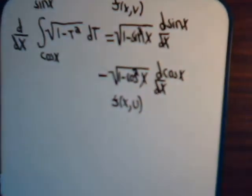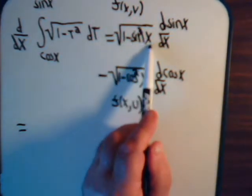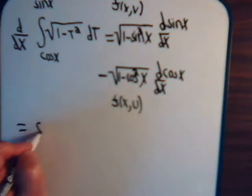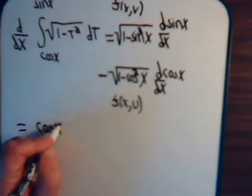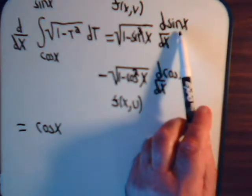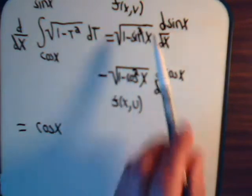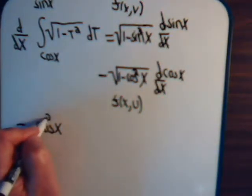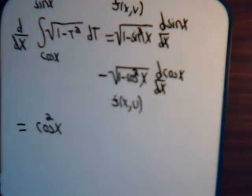So, now, we can say this will equal, that's the cosine of x. And the derivative of the sine of x, that's the cosine of x, times the cosine of x, is the cosine squared of x.